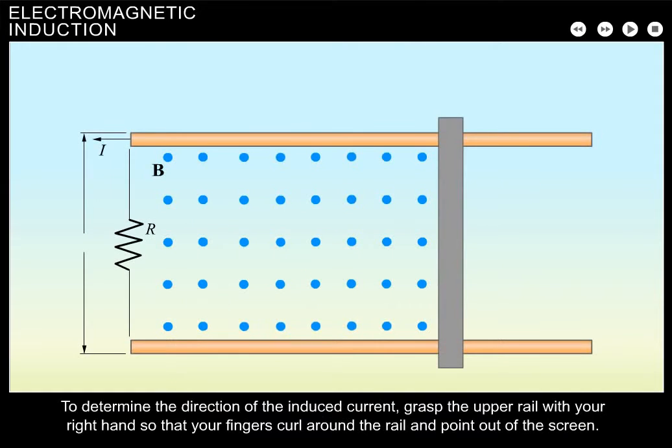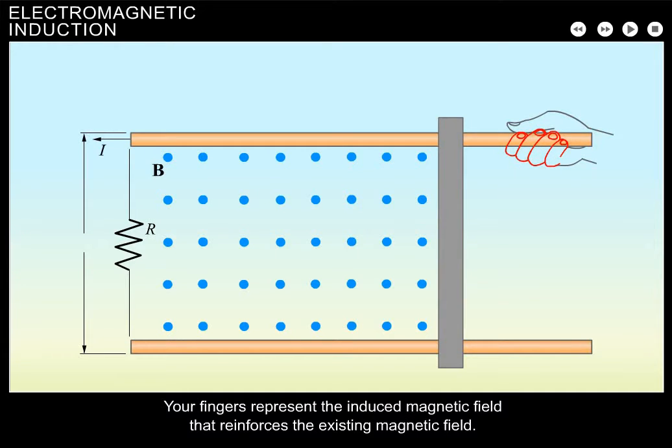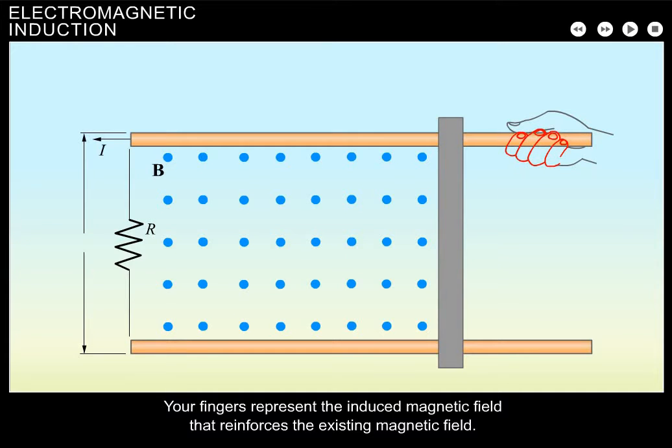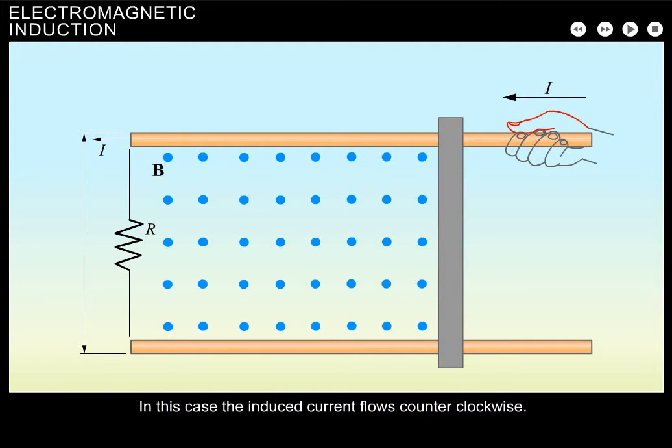To determine the direction of the induced current, grasp the upper rail with your right hand so that your fingers curl around the rail and point out of the screen. Your fingers represent the induced magnetic field that reinforces the existing magnetic field. Your thumb, however, is the key. It points in the direction of the induced current. In this case, the induced current flows counterclockwise.